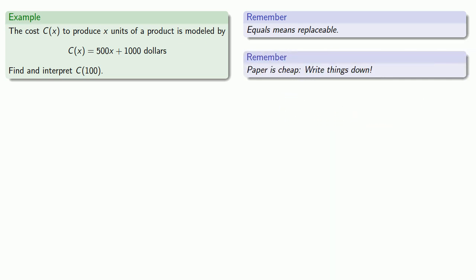So if we want to interpret this, it's helpful to write things down. Here we have x, well that's the units of a product. So we might say that x is the same as the units produced. c(x), on the other hand, is the cost to produce x units. But we also know that c(x) is equal to 500x plus $1,000.